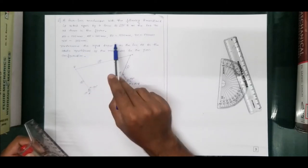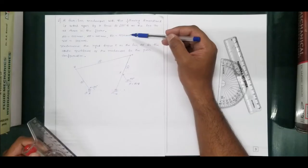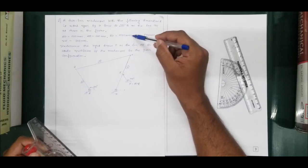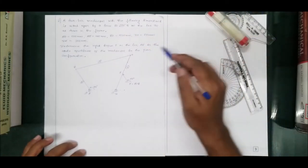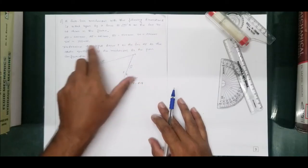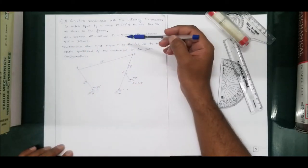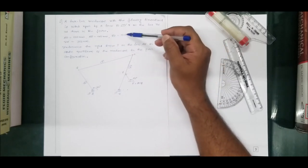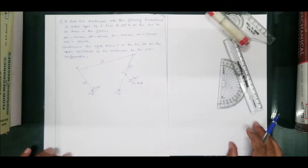A careful observation reveals that if I choose a scale of 1 cm = 100 mm, then link BC will turn out to be 10 centimeters — the maximum dimension. Therefore, I will fix a scale of 1 cm = 100 mm.